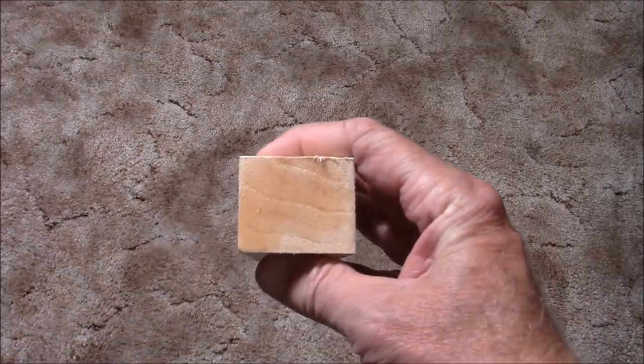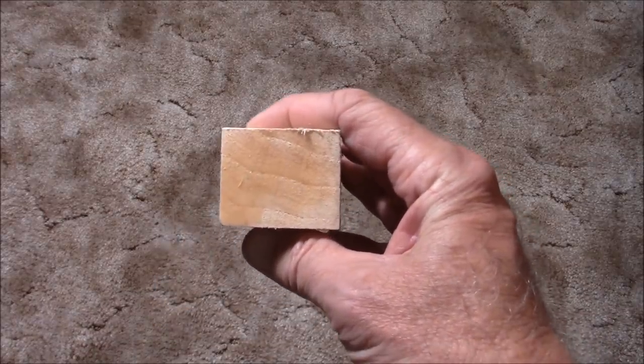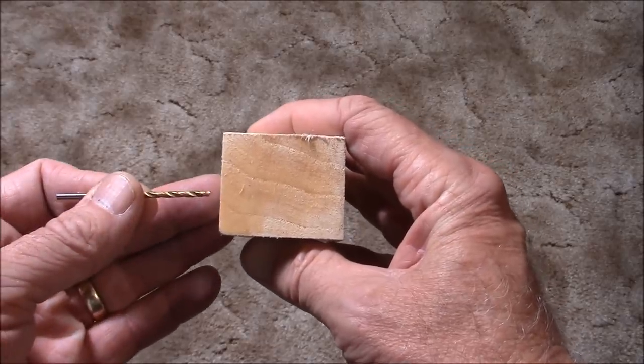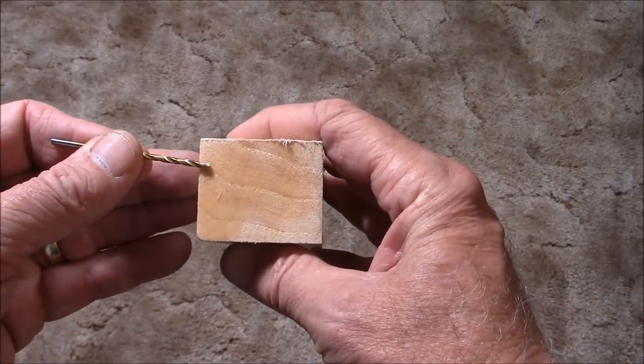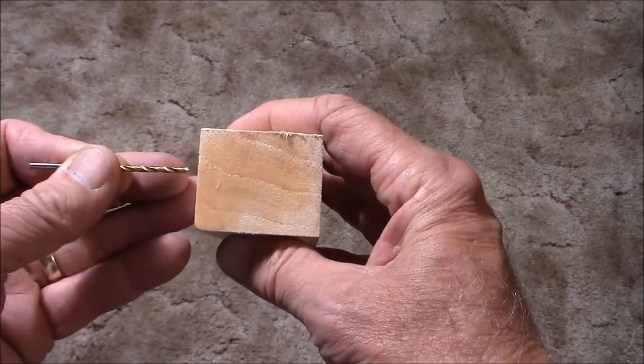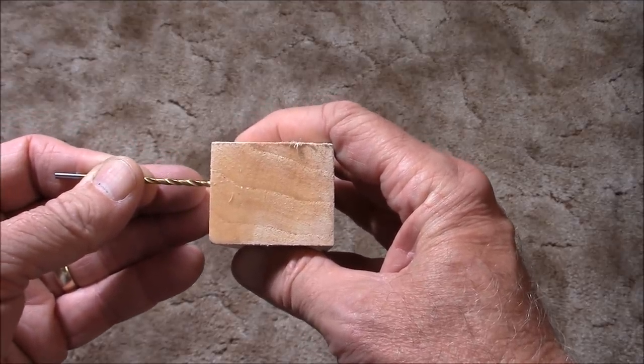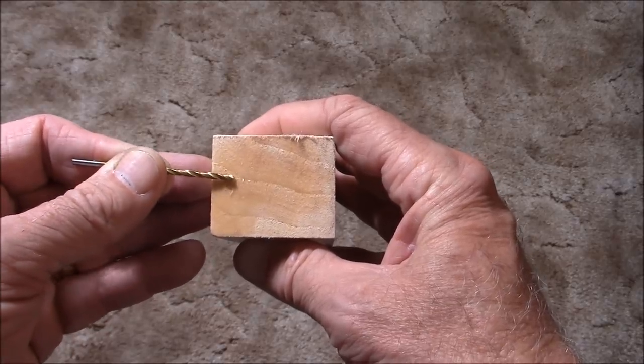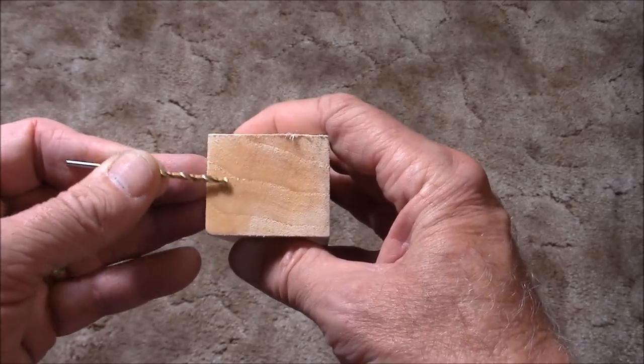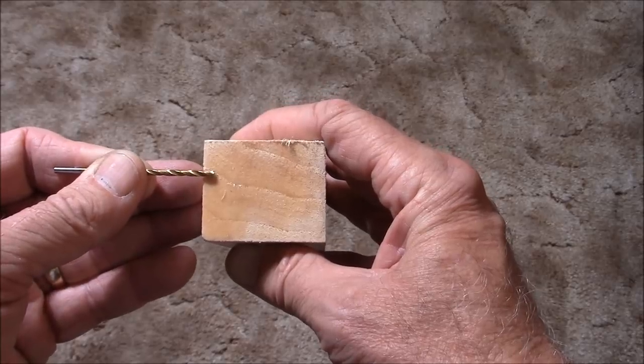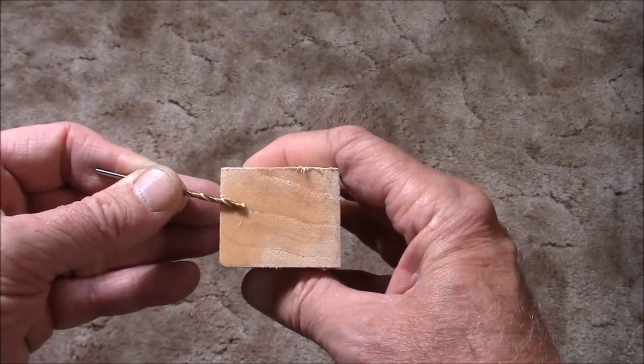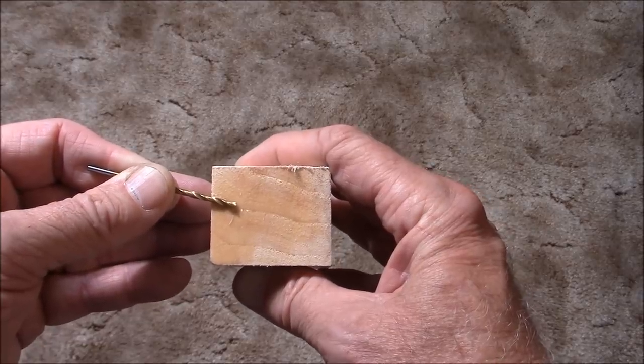A great pinewood derby car starts with a great block of wood. This is an example of a very poor piece of wood. The reason is that the grain lines are at a sharp angle to the side of the car into which you'll be drilling your axle holes. What happens is because these lines of grain are harder than the rest of the wood, as the drill penetrates, it is actually bent and turned slightly downward. So your axle hole ends up at a slight angle.